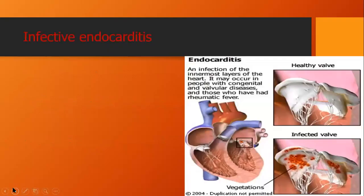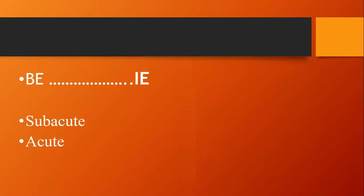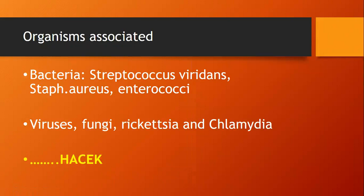Infective endocarditis is a life-threatening condition involving the inner layers of the heart where all valves are affected, with vegetation formation on the heart valves. It was previously called bacterial endocarditis but is now termed infective endocarditis. It can be subacute or acute. The most important organisms are Streptococcus viridans and Staphylococcus, and critically the HACEK group of bacteria, which is particularly relevant to periodontics.